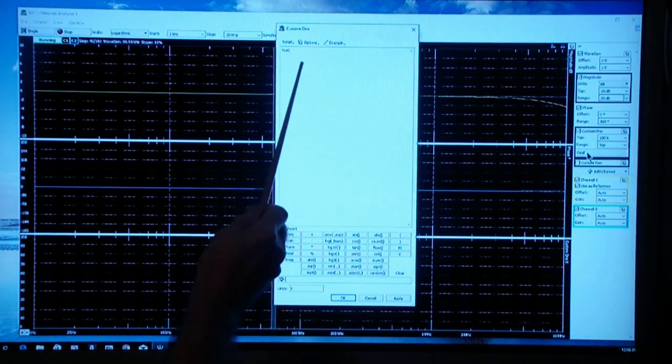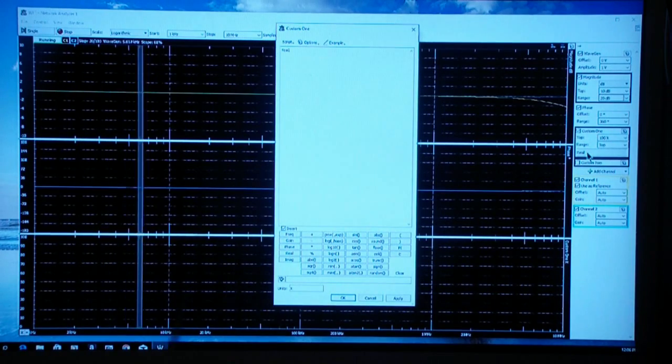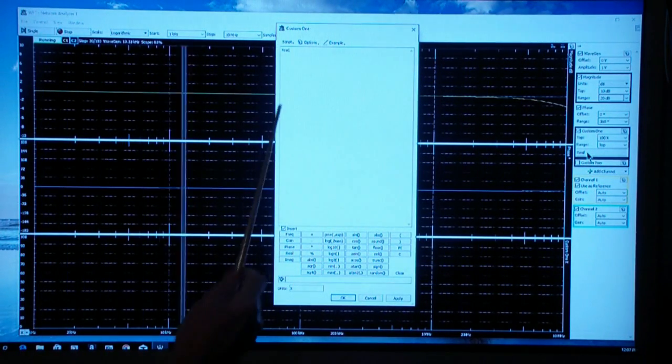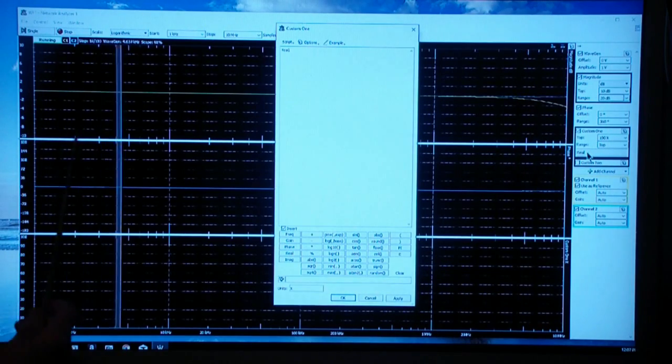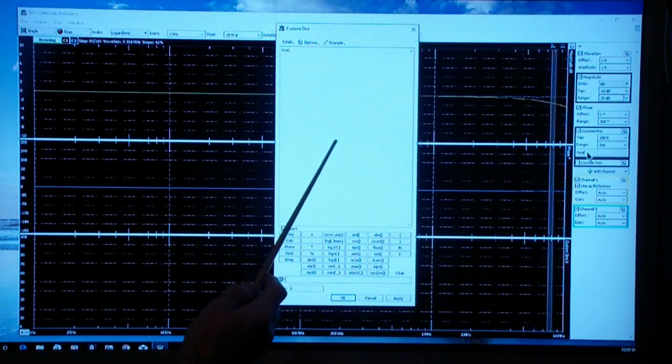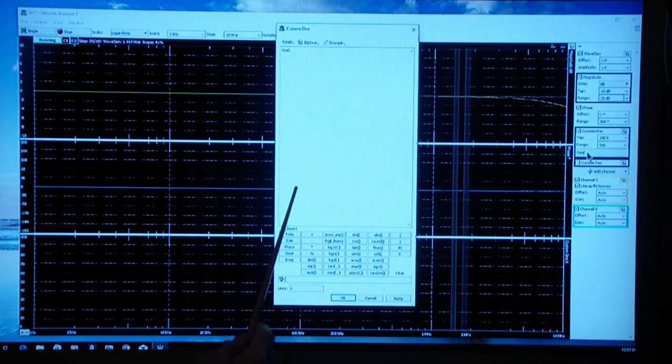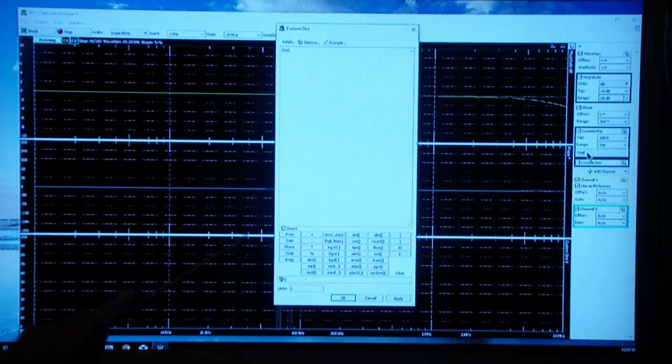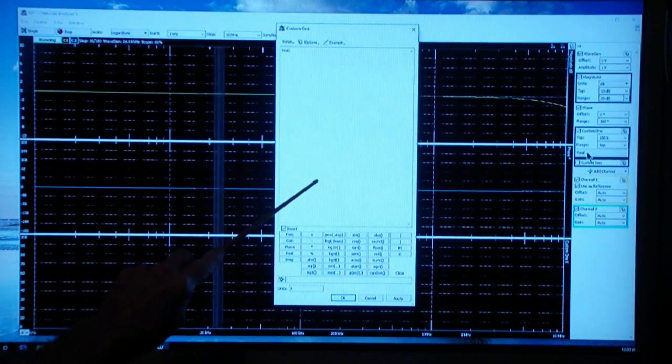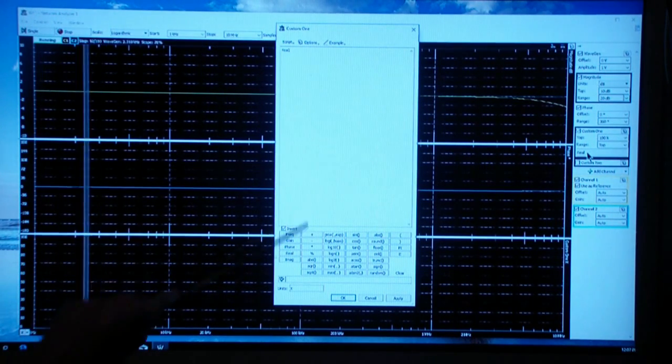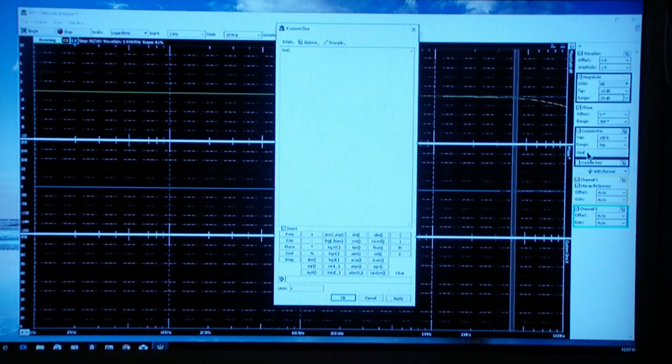Then the network analyzer would step to the next step, and depending on how many samples you have set, it computes again and you plot that, et cetera.